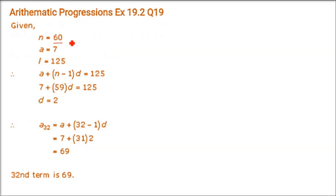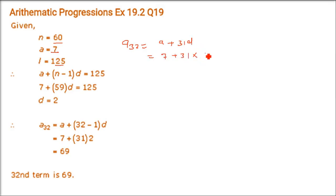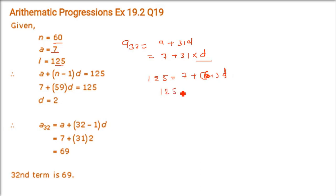An AP consists of 60 terms. If the first and last terms are 7 and 125, find the 32nd term. A32 equals a + 31d. We know a equals 7. Using the last term: 125 equals 7 + 59d, so d equals 2. Putting in: A32 equals 7 + 31·2 equals 7 + 62 equals 69.